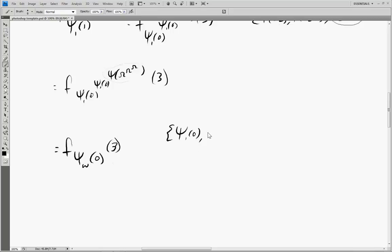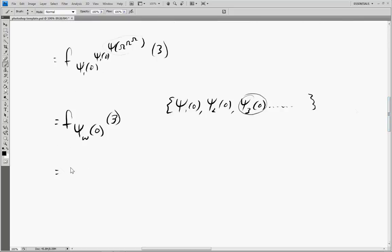So the first thing we want to do is we want to break this up into its fundamental sequence, which is ψ₁(0), ψ₂(0), ψ₃(0), and we're diagonalizing to 3, so it's the third element here. So this just gets diagonalized to f_ψ₃(0)(3).